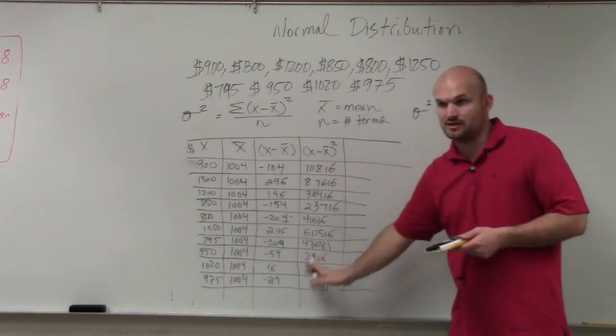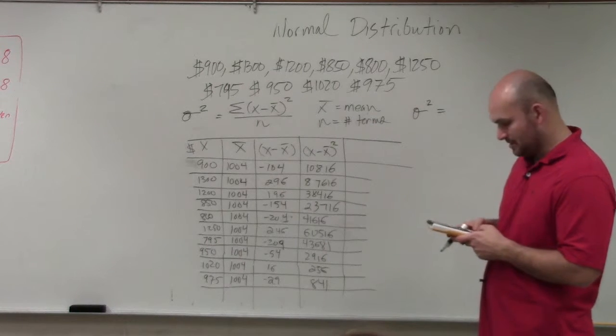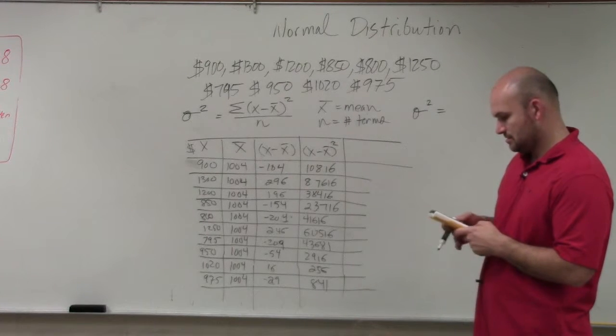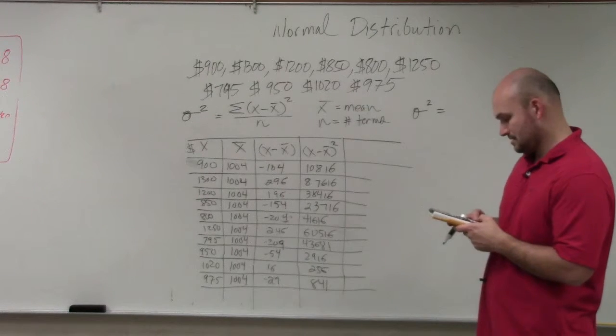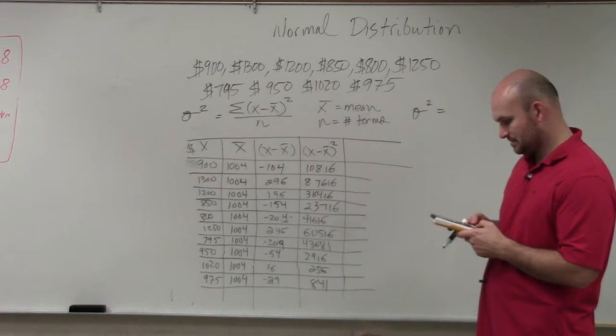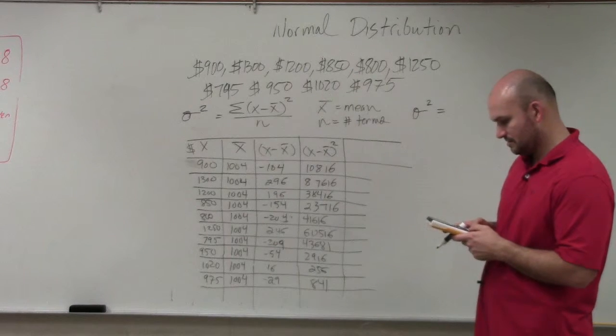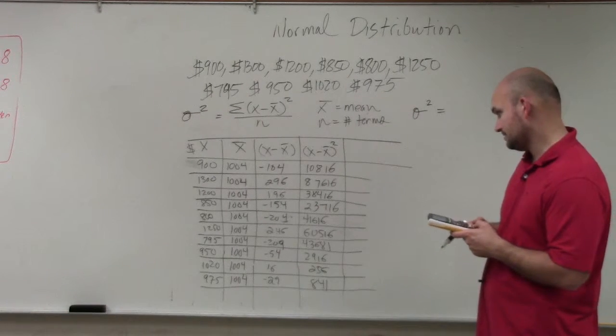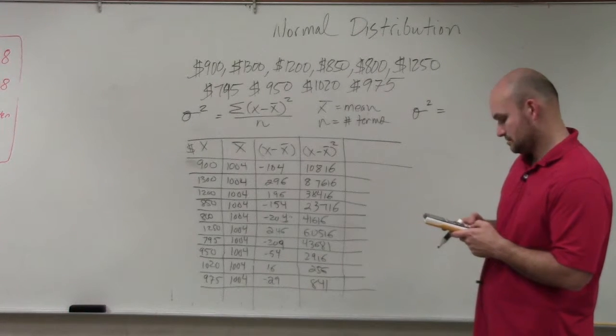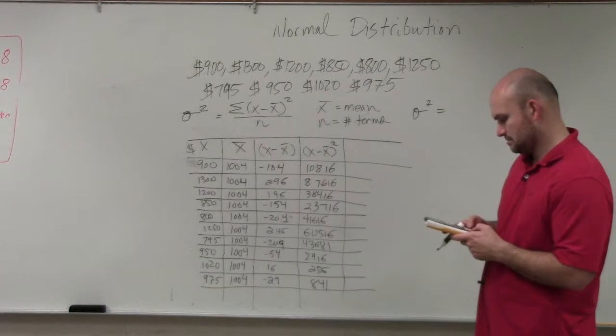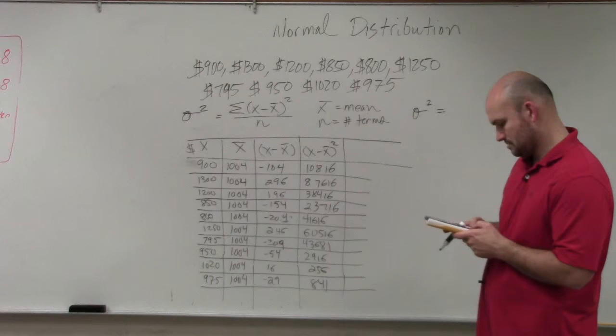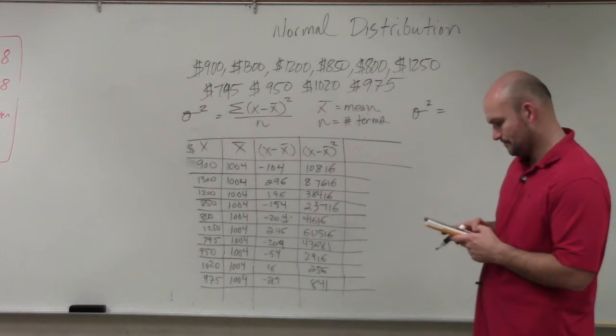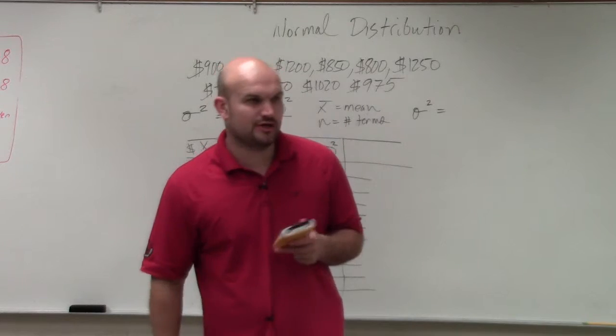So now I'm going to literally just go down the column, Junho, and I'm going to add every single term inside of there. So I'm going to do 10,816 plus 87,616 plus 38,416 plus 23,716. So you got to be careful because you can make a mistake here very, very easily. And I get 310,391.